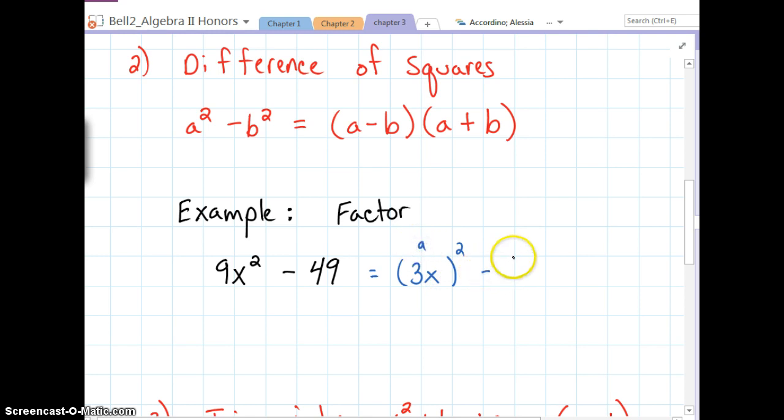49 is a perfect square because we can write it as 7 squared, and that's technically my b value. So this is going to become 3x minus 7, 3x plus 7. Those two, GCF and difference of squares, are the easiest types of factoring.